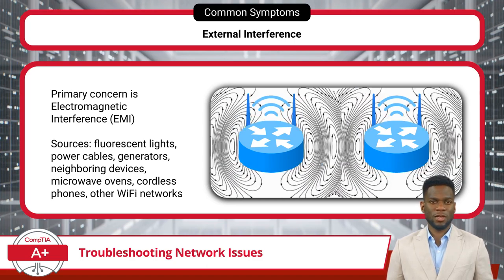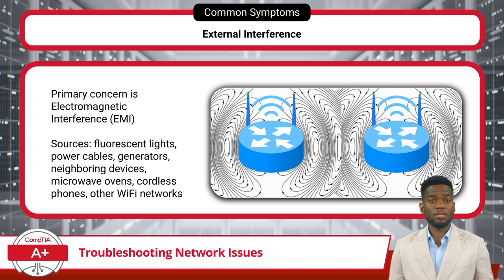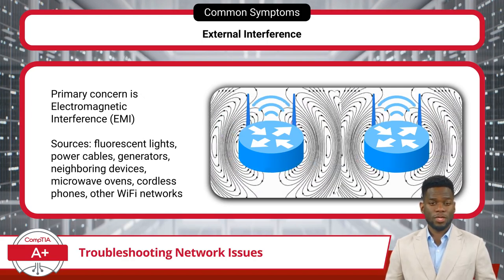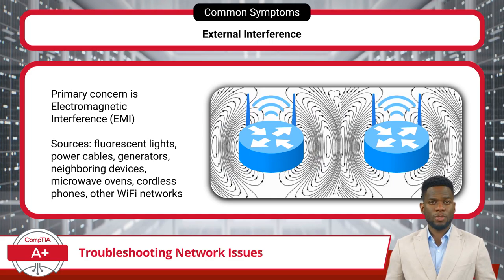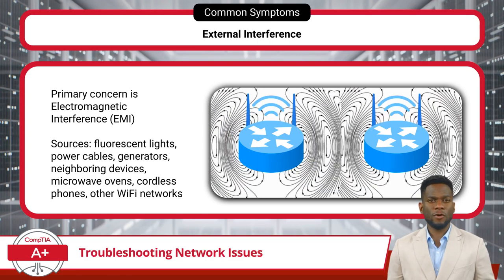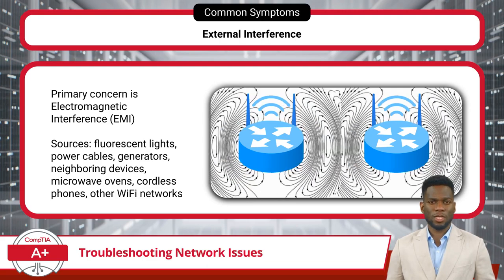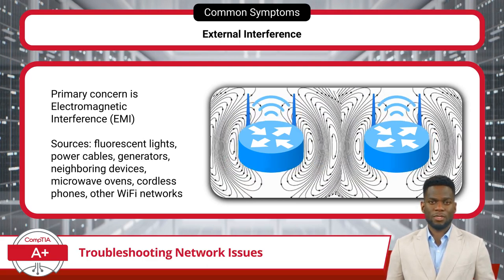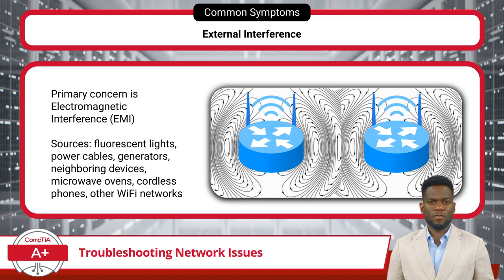Additionally, investing in Wi-Fi equipment that incorporates advanced interference mitigation technologies can help minimize the impact of EMI on network performance. These technologies may include signal filtering mechanisms or adaptive channel selection algorithms, which work together to optimize signal quality and reliability in the presence of external interference.